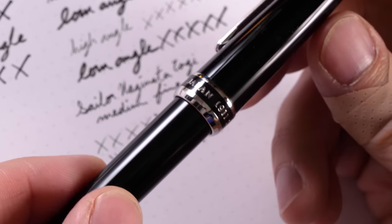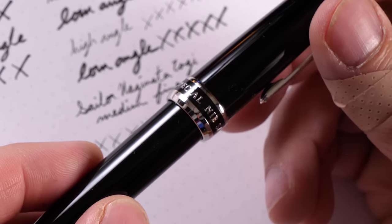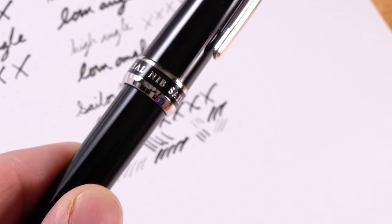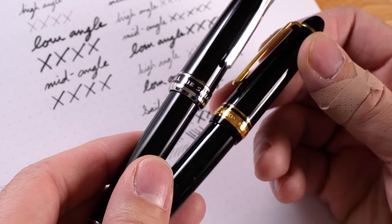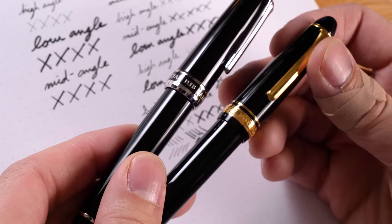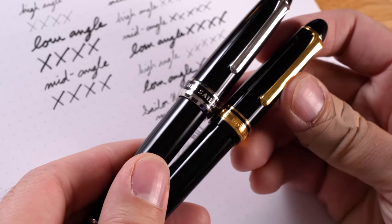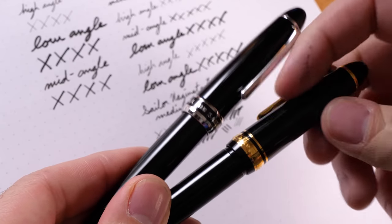It says Sailor Japan 1911 a special nib on the center band as opposed to your typical 1911 which just says Sailor Japan founded 1911. Other than that, the pens are pretty similar except for of course the nib.